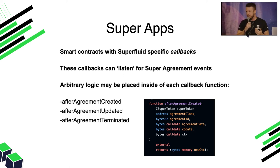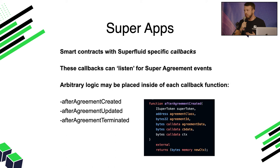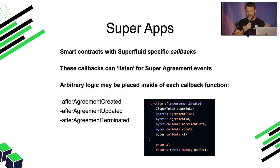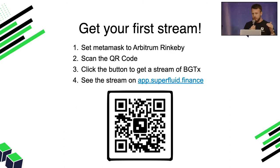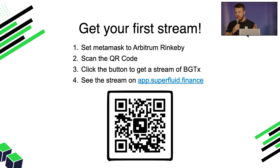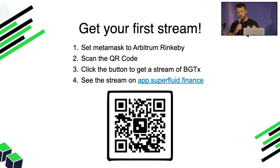All right, guys. I hope you've seen that streaming is simple. We see streaming as a natural evolution of tokens — you shouldn't just be transferring them like we've done for thousands of years; you should also be able to stream them because blockchains are supposed to do things we couldn't do before. So what I'd like everyone to do is get your first stream. Whip out your phones and scan this QR code. After connecting to MetaMask on Arbitrum Rinkeby, you'll find a button which will give you a stream. The stream is in the BGT super token — BGT is the token you need to get lunch during the event. The streaming BGT will start coming to your wallet, and every second you'll have a bit more money to spend on lunch.